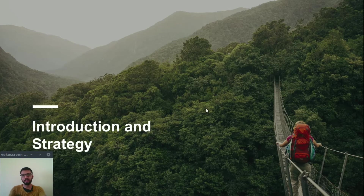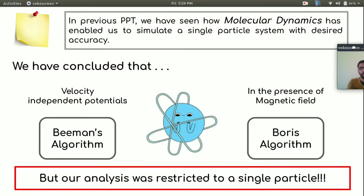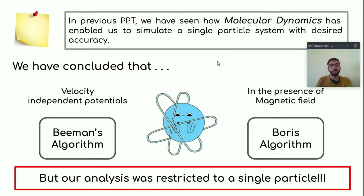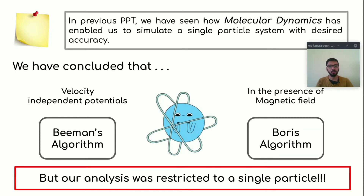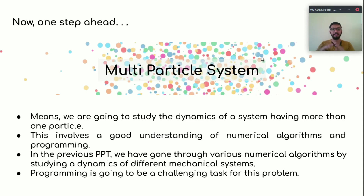Let's start with the introduction and strategy. In the previous presentation we saw how molecular dynamics enabled us to simulate a single particle system with desired accuracy. We concluded that for velocity independent potentials, Beeman's algorithm works best, and for magnetic field, Boris algorithm works best. But that analysis was restricted to a single particle. In this presentation we will move one step ahead and simulate a multi-particle system — meaning more than one particle. This involves a good understanding of numerical algorithms and programming.